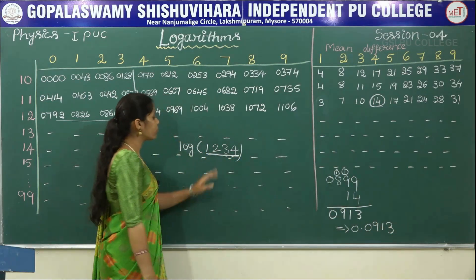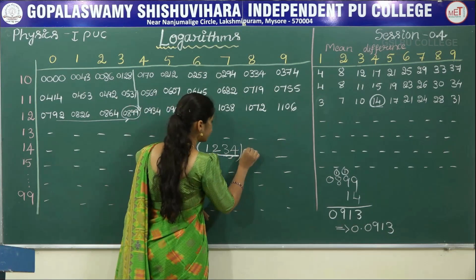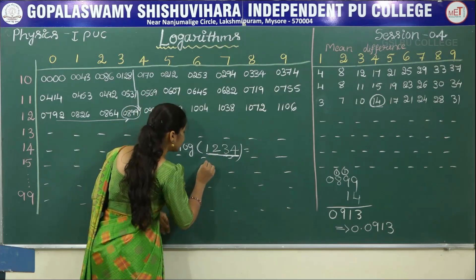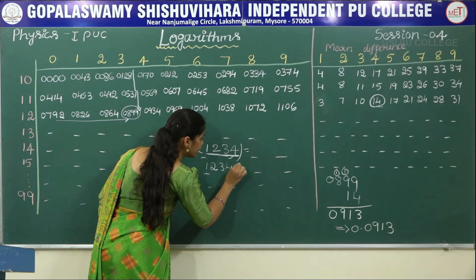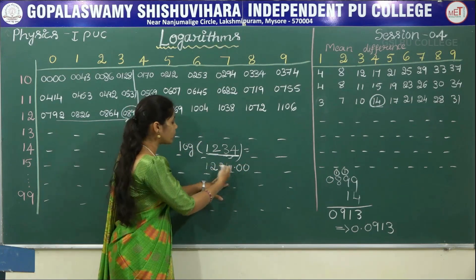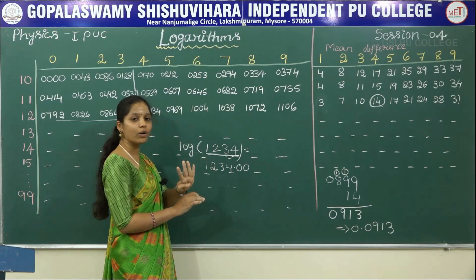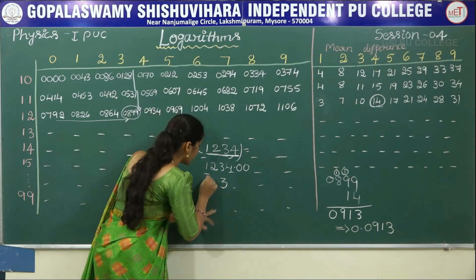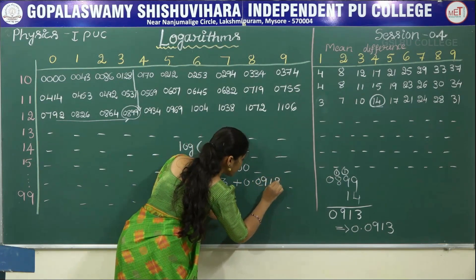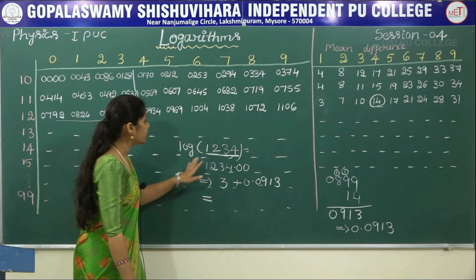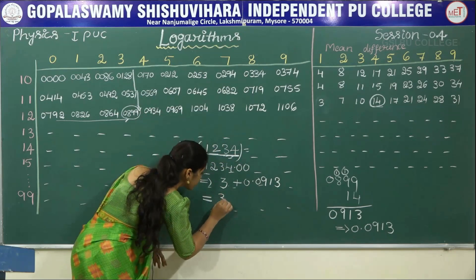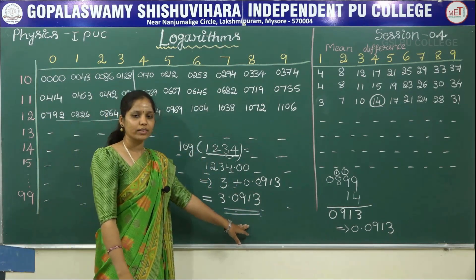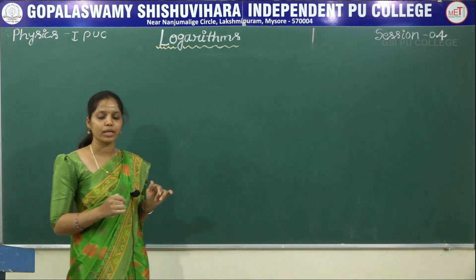So what is the log value of 1234? We write it as 1234.00 — there are four digits before the decimal point, subtract 1, so the characteristic is 3. The mantissa is 0.0913. Therefore, the log value of 1234 is 3.0913.